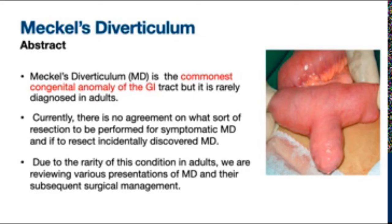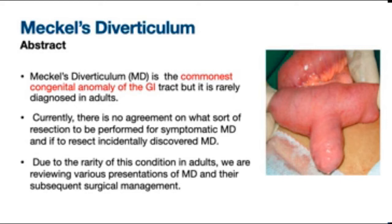Meckel's diverticulum is known to be the commonest congenital anomaly of the gastrointestinal tract. However, it's still rare to be diagnosed in adults. Currently, there is no agreement on what type of resection should be performed for symptomatic Meckel's diverticulum, or whether to resect an incidentally discovered Meckel's diverticulum. Due to the rarity of this condition in adults, we are reviewing various presentations and their subsequent surgical management.